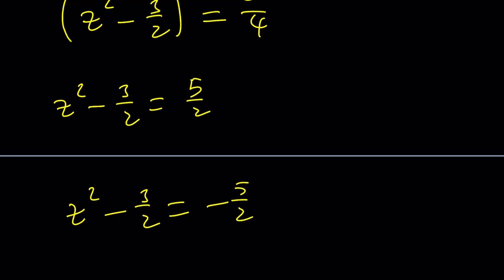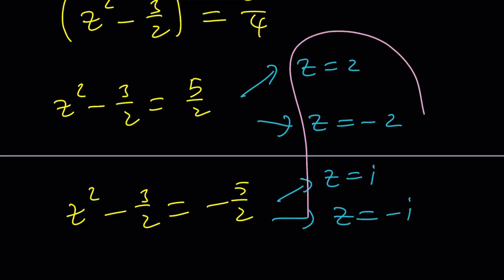But after adding 3 halves to both sides you're going to get z squared equals 8 over 2 which is 4. And of course this is going to give you two solutions. So basically you're going to be getting z equals 2 or z equals negative 2 from here. And in this case you're going to have z squared equals negative 1. And that's going to give you z equals i and negative i as before. And this brings us to the end of this video.